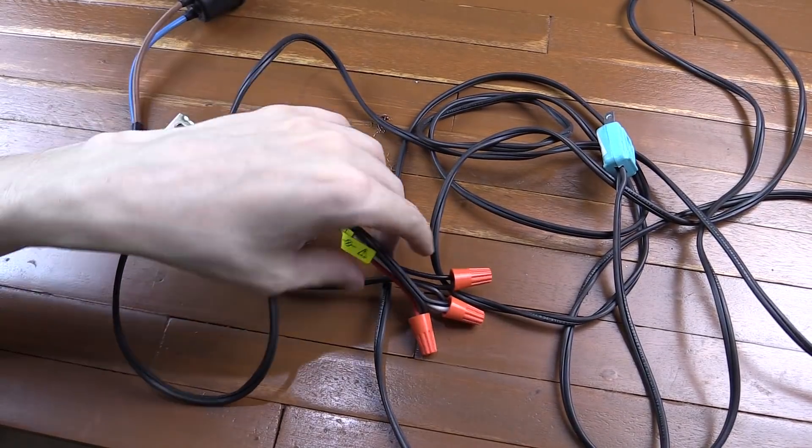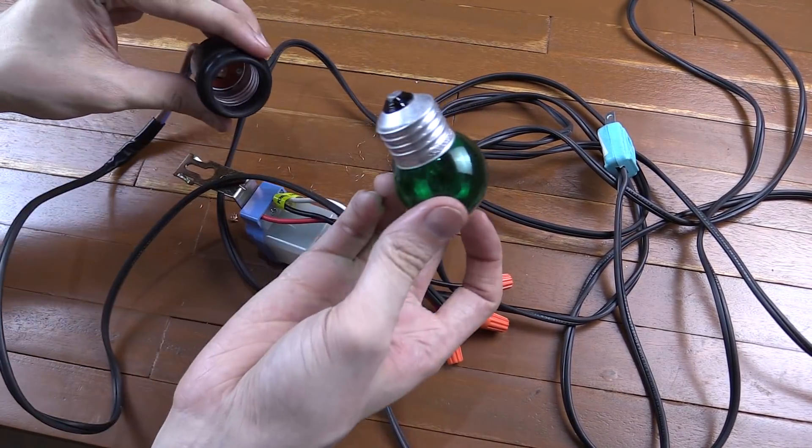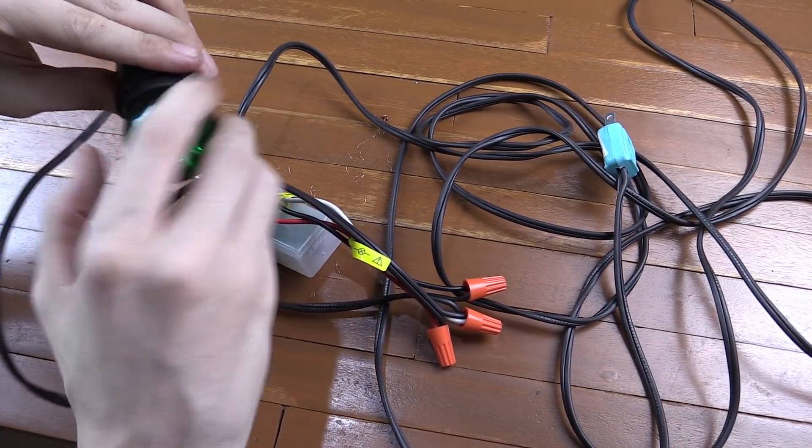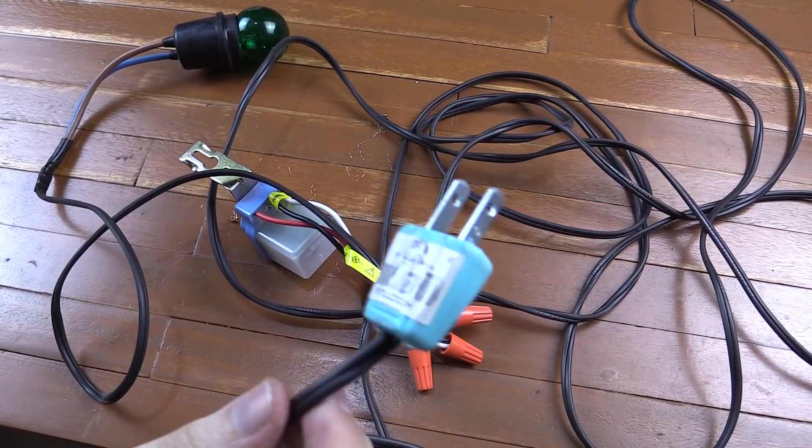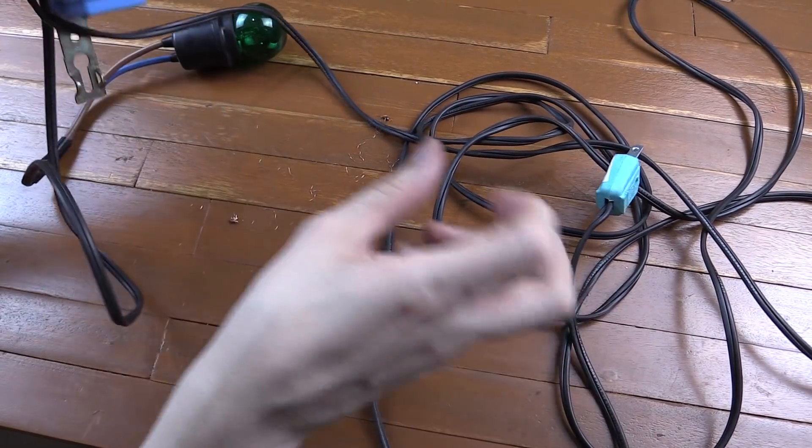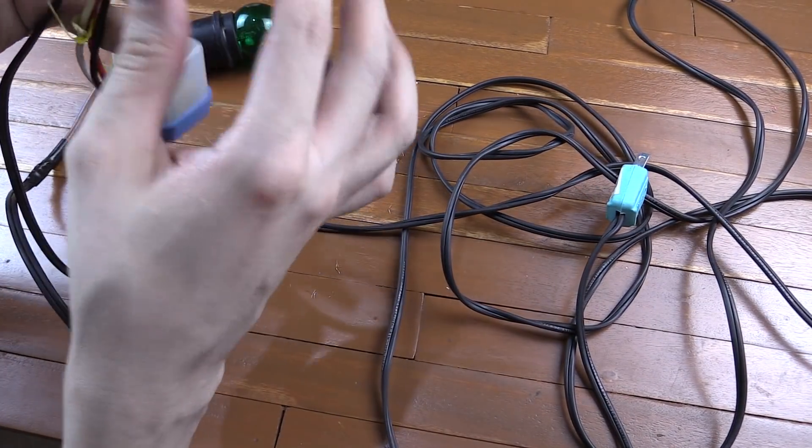Now, in theory, that should all work. Let's put a bulb inside the holder. And then I'll plug this into the wall. Hopefully this won't go bang. In fact, before I do that, let me verify if I've connected everything correctly.